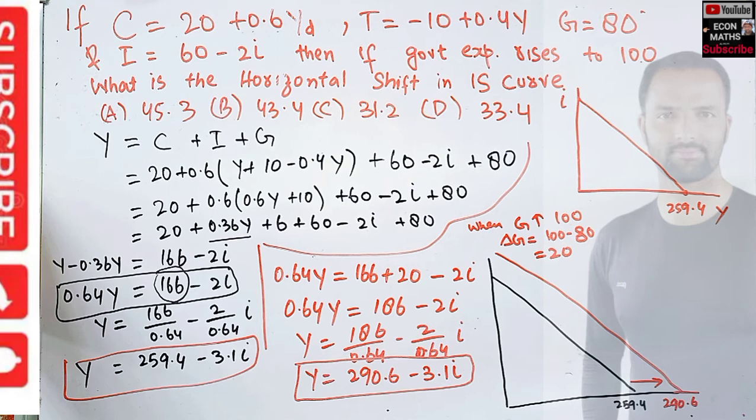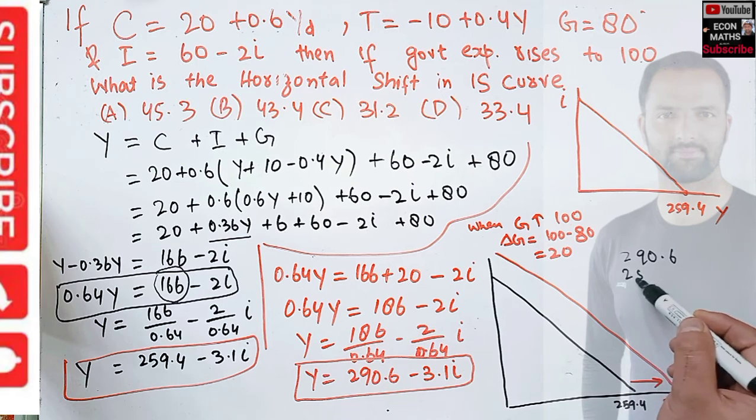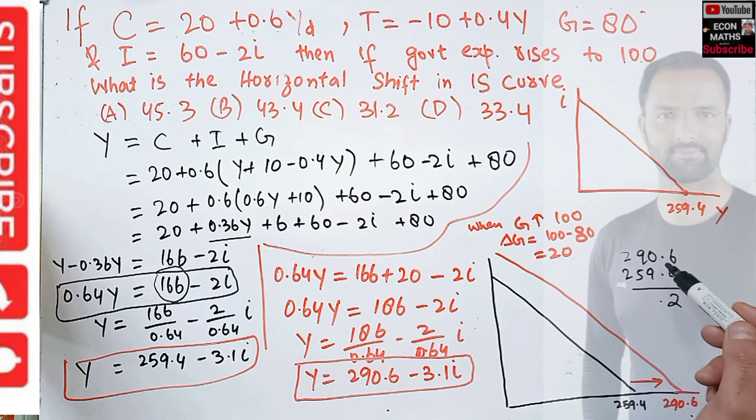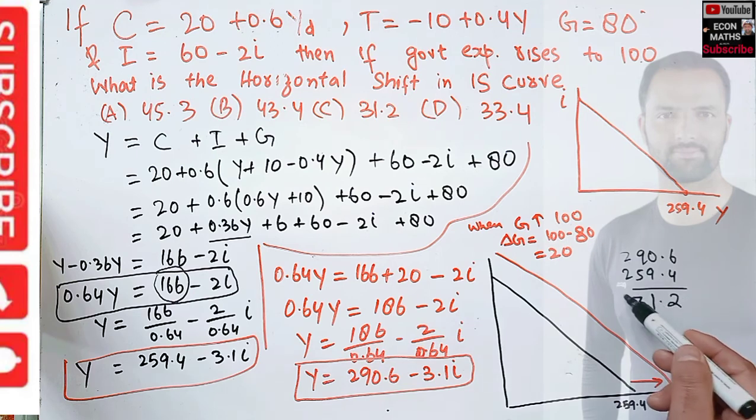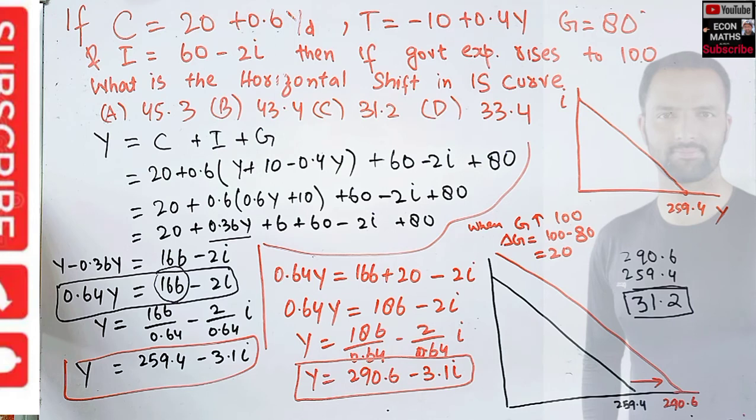Now what is the horizontal shift in the IS curve? Horizontal shift equals 290.6 - 259.4 = 31.2. This means when government expenditure rises to 100, that is when government expenditure has increased by 20, the horizontal shift is 31.2. The correct option is (C).